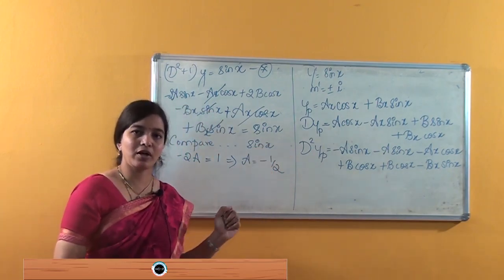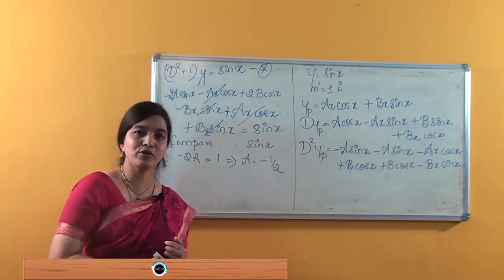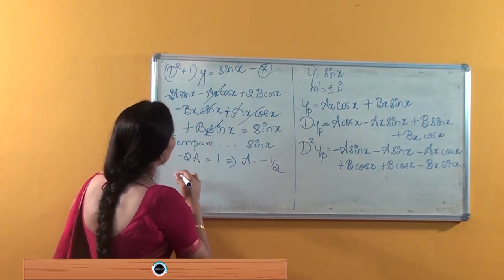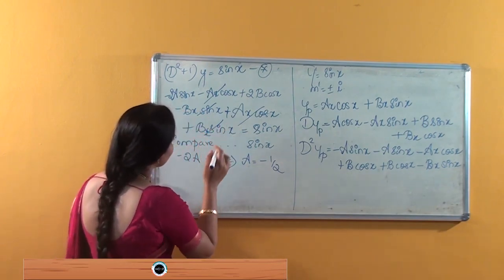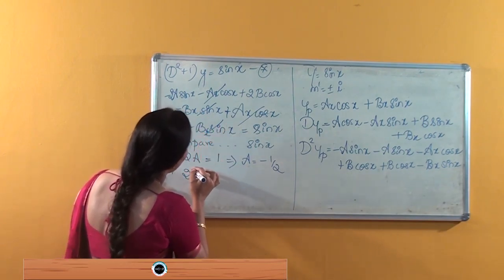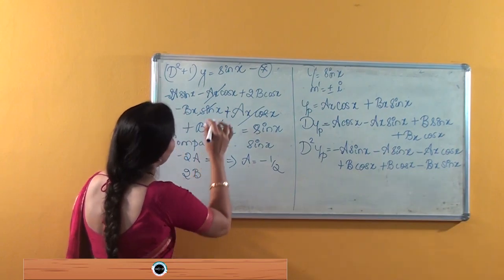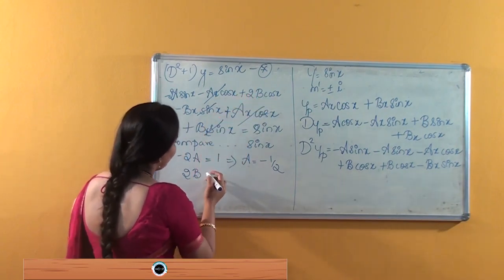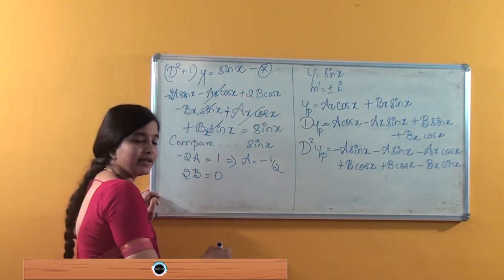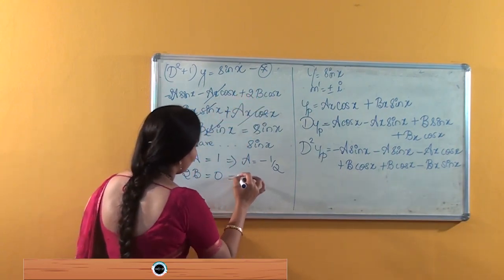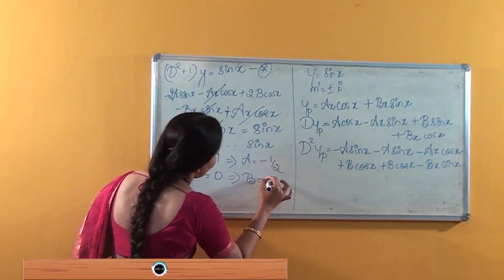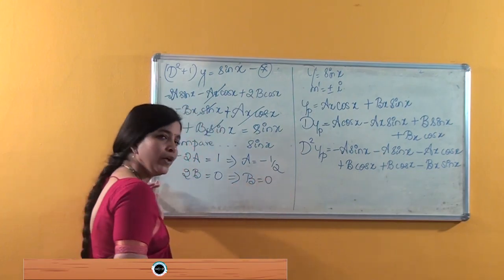Next, comparing the coefficients of cos x: 2B = 0, so B = 0.